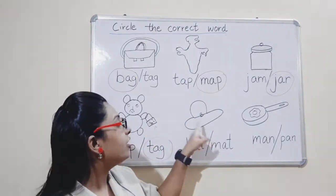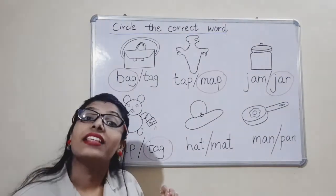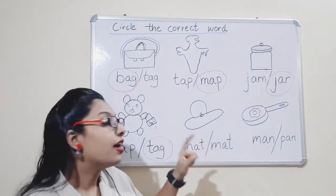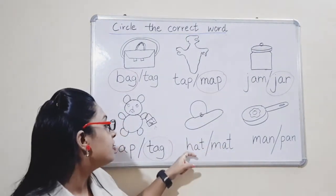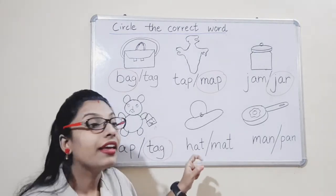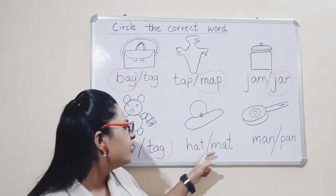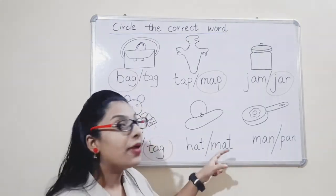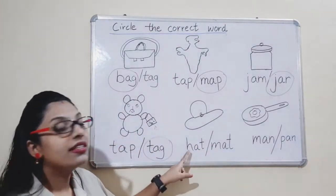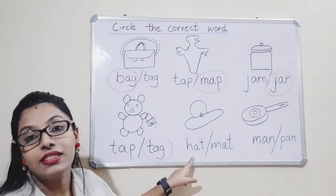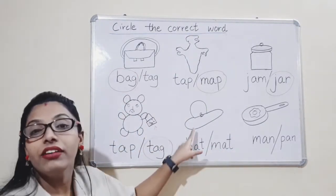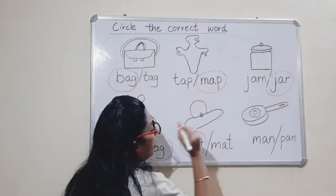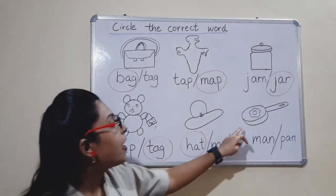Now the next picture. Hat. H-A-T. Is this H-A-T? Yes. Is this H-A-T? No — that is M-A-T. So we will circle this one because this is the spelling of hat. Now circle it.